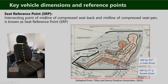The next reference point is the Seat Reference Point (SRP). It is the intersecting point of the midline of the compressed seat back and the midline of the compressed seat cushion. Because the cushion material properties are defined, we consider the compressed dimensions. The SRP for a particular seat is fixed relative to that seat, but as the seat moves along the seat track to accommodate different drivers, the SRP position also varies in relation to the vehicle.